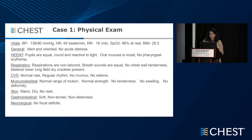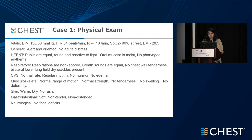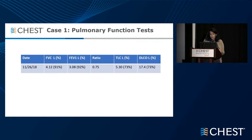On exam, most of it was benign. He did have some bilateral lower lung field dry crackles, but skin was okay. Joints had normal range of motion, no tenderness or swelling, no deformities, no skin rashes. GI and neurological exam fairly benign. His saturation was 96% at rest. His PFTs showed FVC 91%, ratio 75%, total lung capacity 73%, and DLCO 73%.